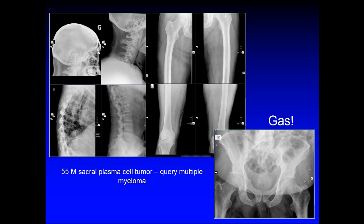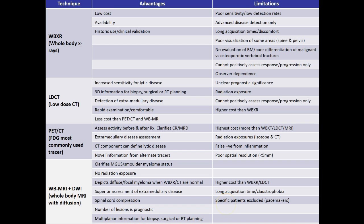Here is a summary of all the techniques discussed — the advantages and limitations from whole-body x-rays to low-dose CT scans, to PET scans with the most relevant commonly used tracer, and then whole-body MRI with diffusion imaging.